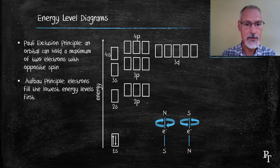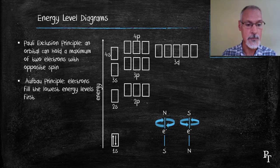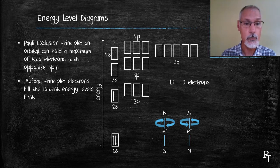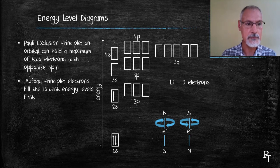So when I'm placing in my electrons, I begin at the lowest energy level and work my way up. In the case of lithium with three electrons, I would place two in the 1s orbital, and then place one in the 2s orbital. That would be the energy level diagram for lithium.